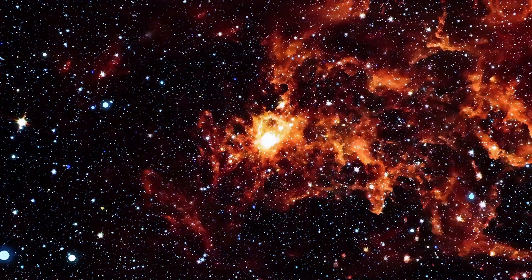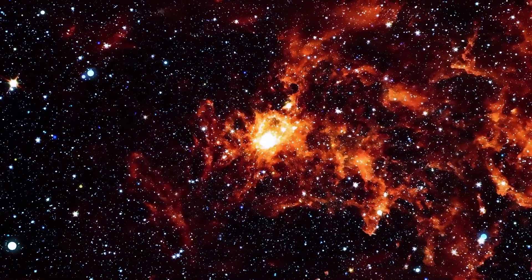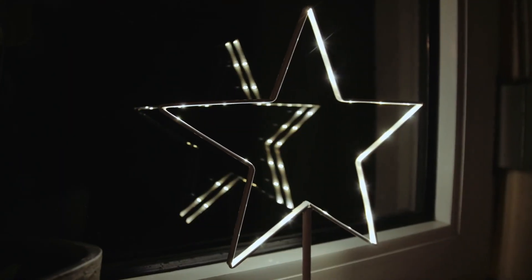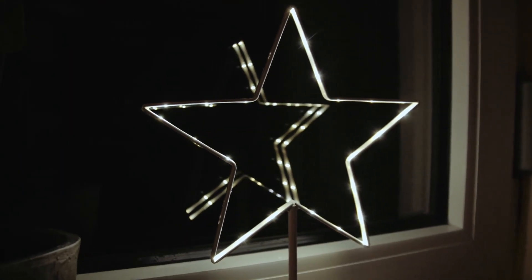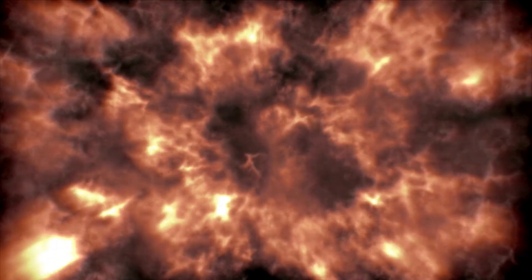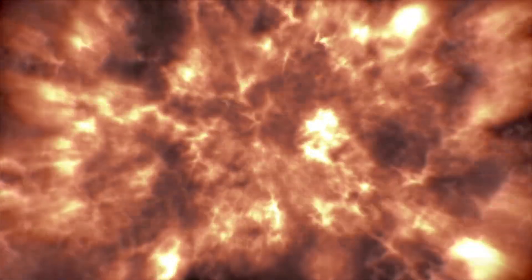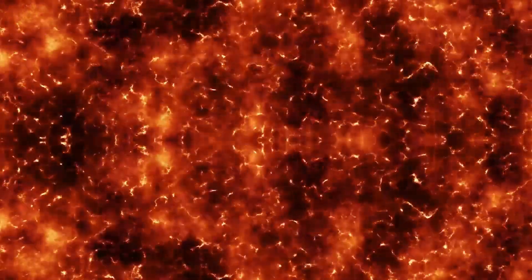To put that in perspective, the Milky Way is about 100,000 light-years across. This makes Alcyonius nearly 100 times larger, extending across a distance that would take light 16 million years to travel. If it were somehow visible to the naked eye in our night sky, it would appear as large as the full moon, despite being unimaginably far away.